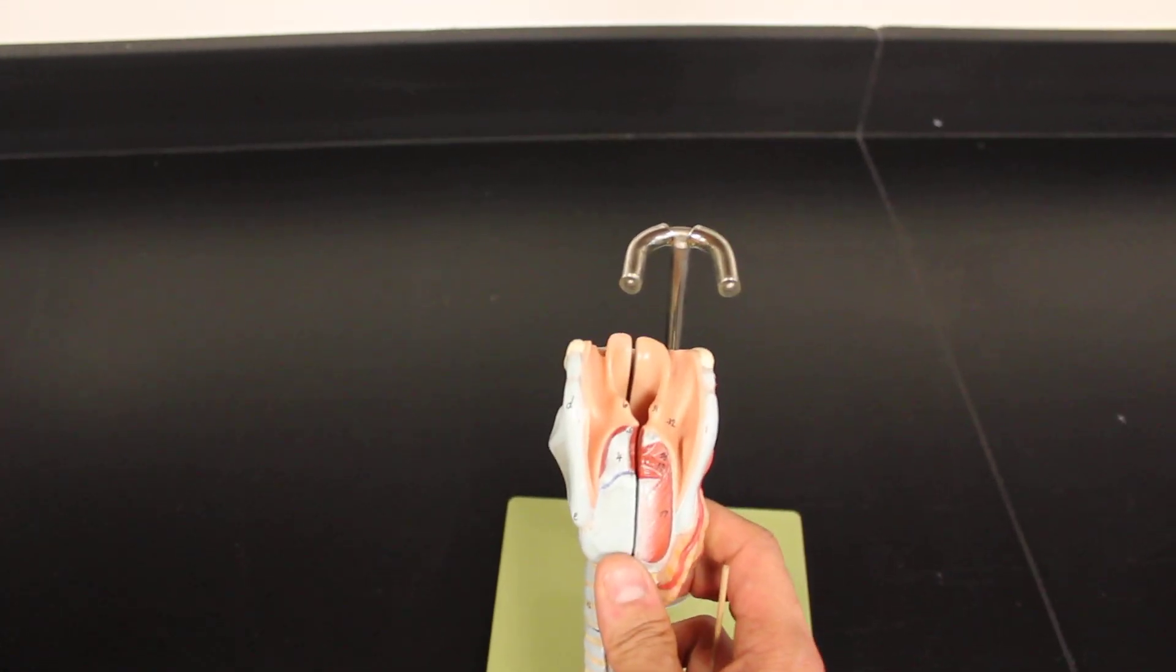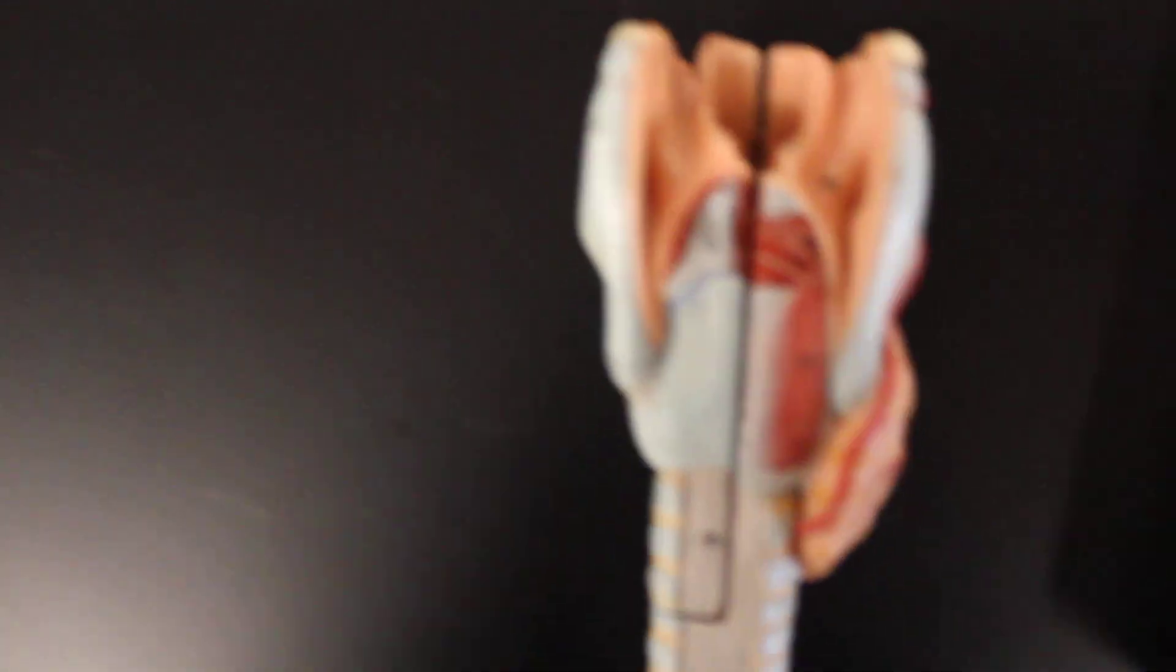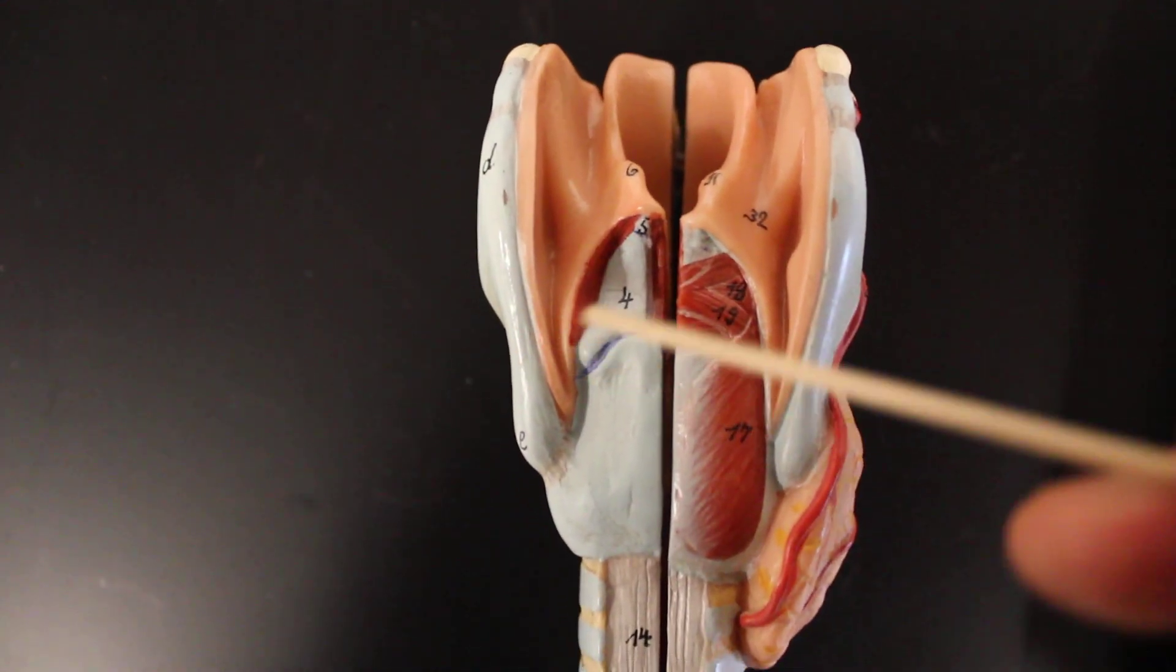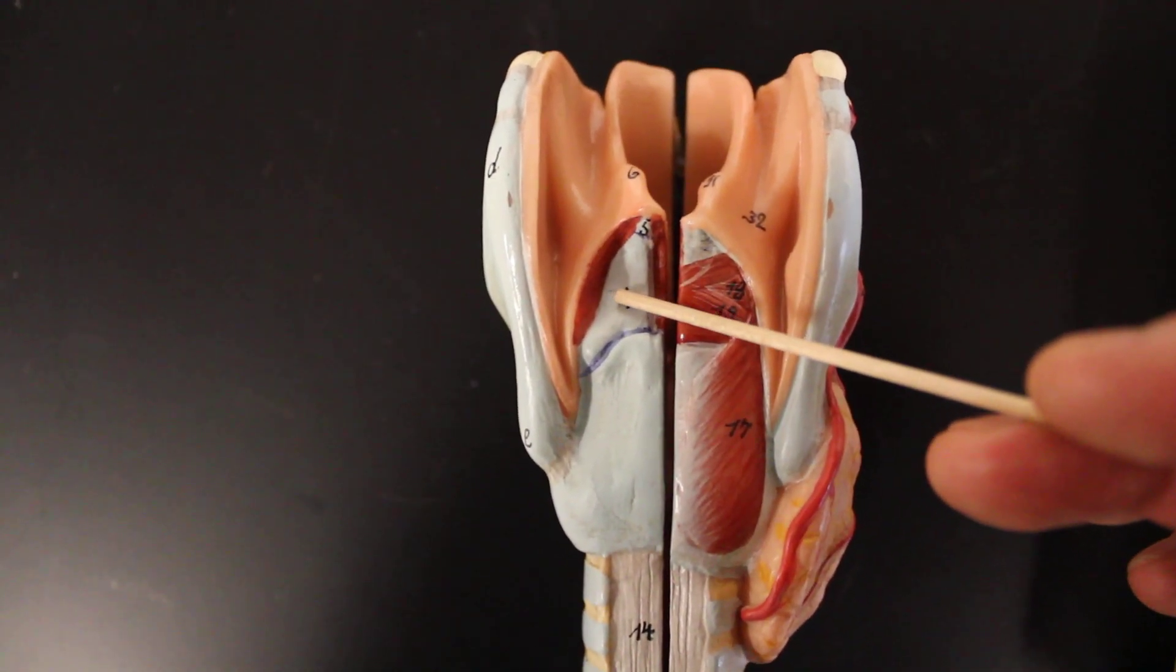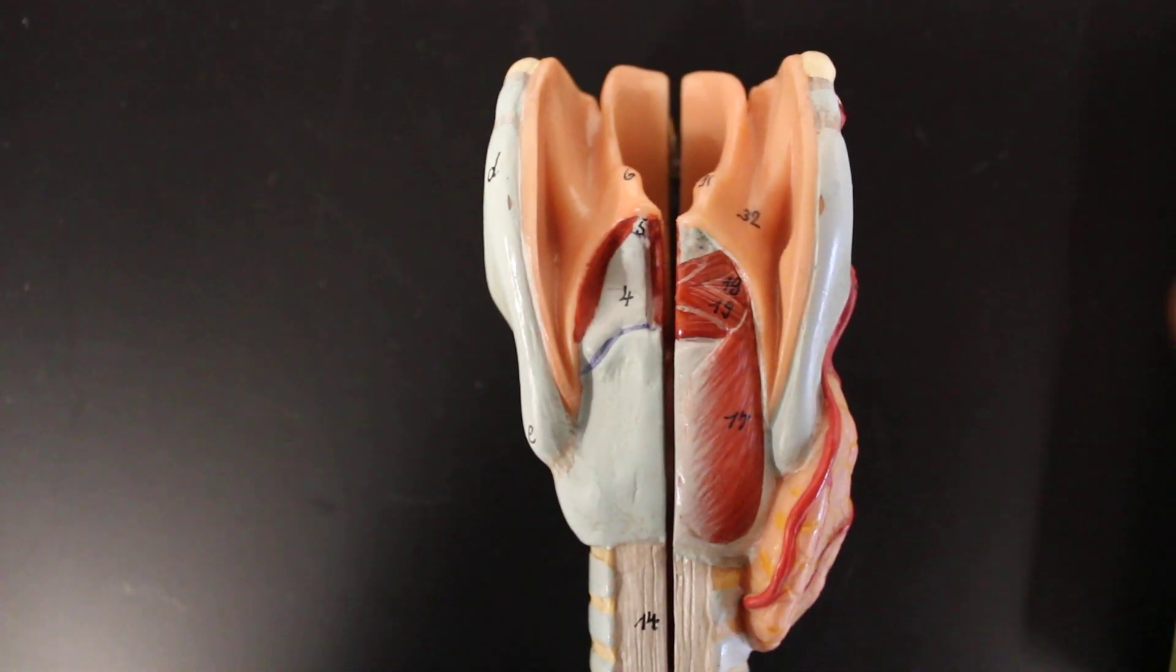Below that it would be this one here. As you can see this is what we call the arytenoid cartilage. It looks like a little A, denoted as number four. So that's arytenoid cartilage, attaches to some vocal folds. And then right at the top is what we call the corniculate cartilage.